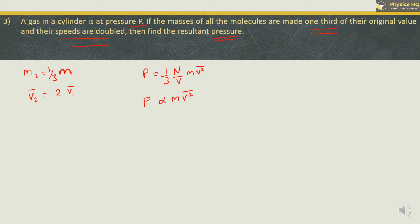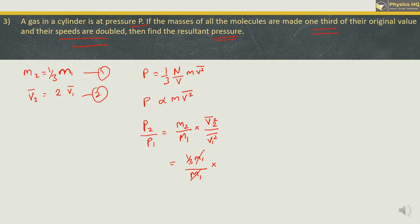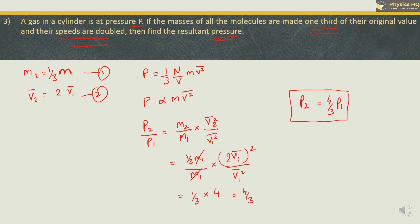Using the proportionality relation: P₂/P₁ = (M₂/M₁) × (V₂²/V₁²). Substituting M₂ = M₁/3 and V₂ = 2V₁: P₂/P₁ = (1/3) × (4V₁²/V₁²) = 4/3. So the new pressure P₂ = (4/3)P₁ — the new pressure is 4/3 times the old pressure.